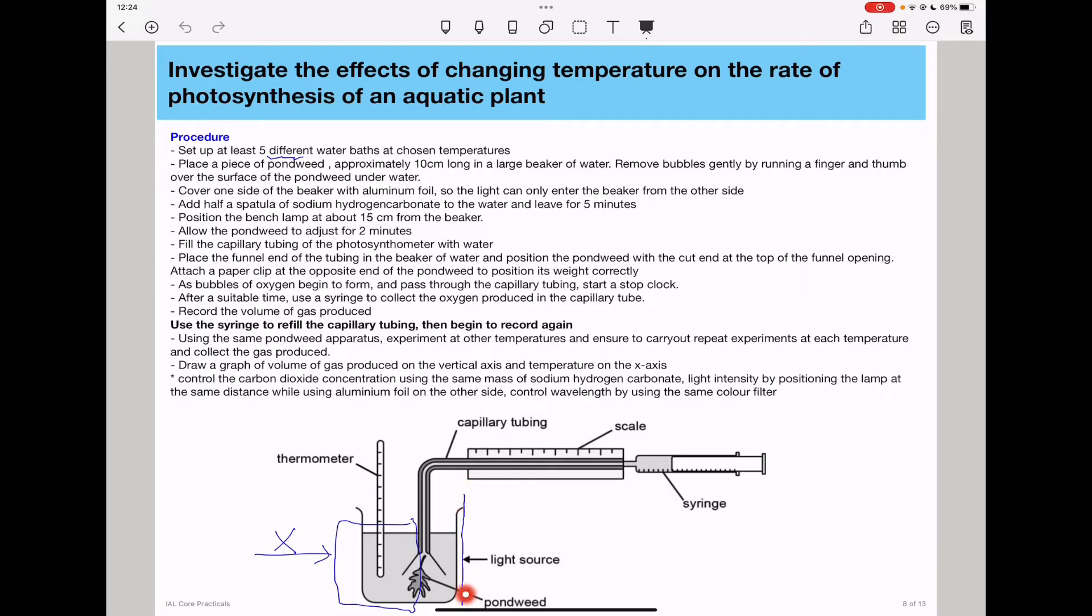At this point, you could choose to position a color light filter so that the plant is exposed to the same wavelength. As bubbles of oxygen begin to form and pass through the capillary tubing, you need to start the stop clock. Remember, every experiment should be carried out within the same time frame.